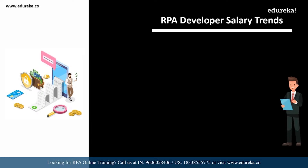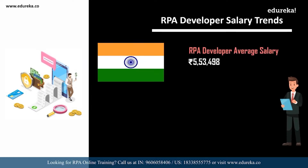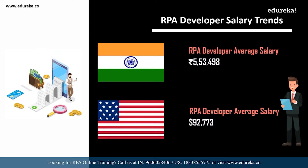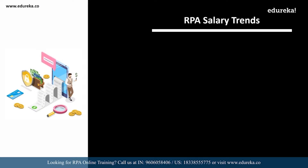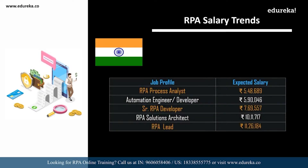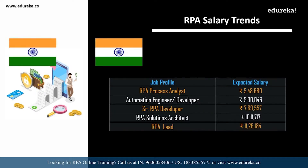Looking at other RPA-related roles in India: an RPA Process Analyst can expect around ₹5,48,000 per annum; an Automation Engineer or Developer around ₹5,90,000; a Senior RPA Developer around ₹7,69,000; an RPA Solutions Architect around ₹10,11,000; and an RPA Lead around ₹11,26,000. That's a huge amount of money.